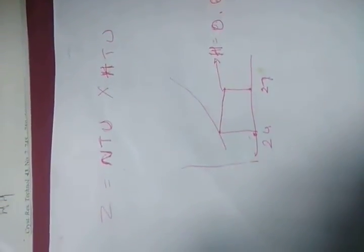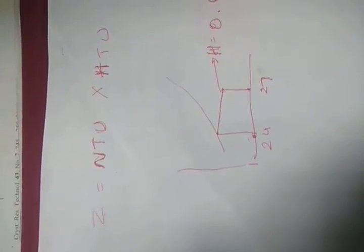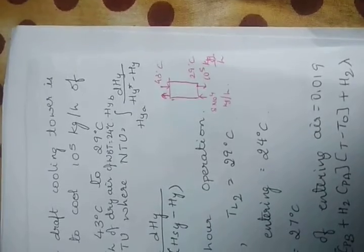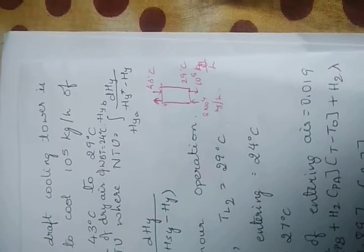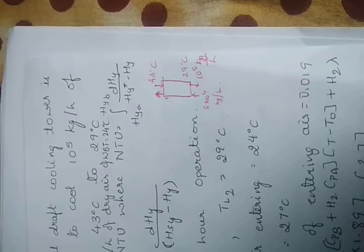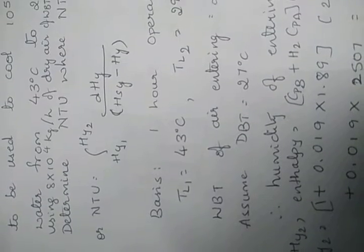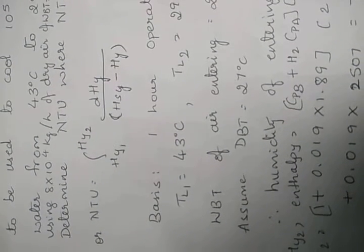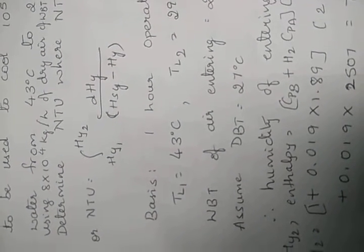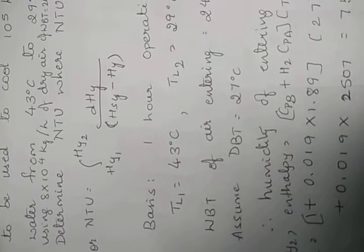The height of the cooling tower can be found using the equation Z = NTU × HTU. The equation used to find NTU is the integration of dHY by (HY* − HY), applying the limits HYA to HYB. It can also be written as the integration of dHY by (HSY − HY) between limits HY1 to HY2.